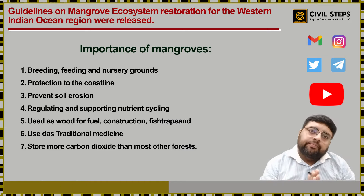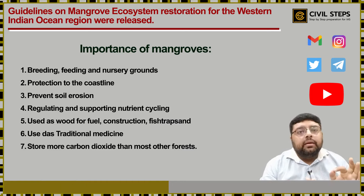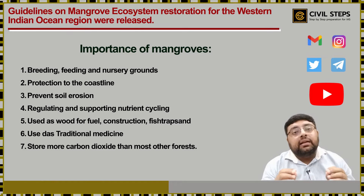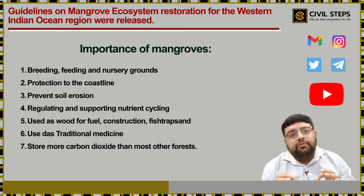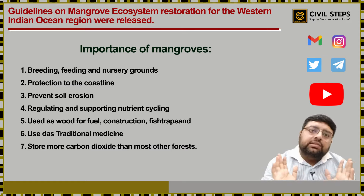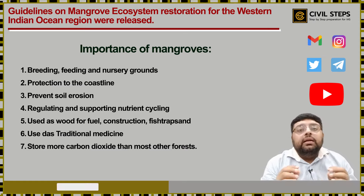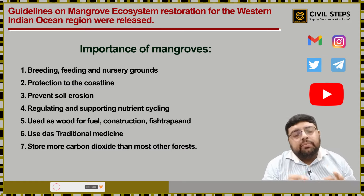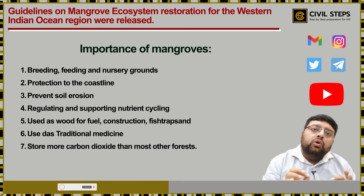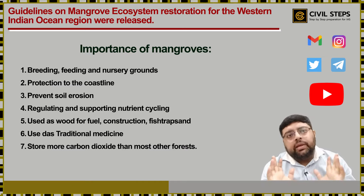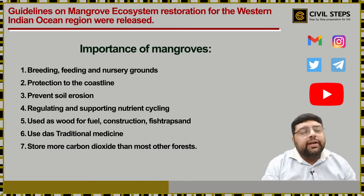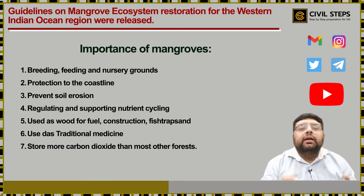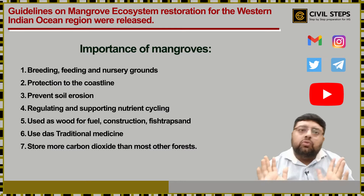The significance of mangroves is very important. Mangroves are the breeding, feeding, and nursery ground for most commercial fishes and crustaceans. They help in protection of the coastline by minimizing disasters due to cyclones and tsunami, and also prevent soil erosion. They also help in regulating and supporting nutrient cycling.